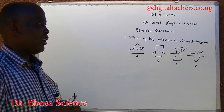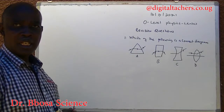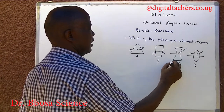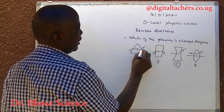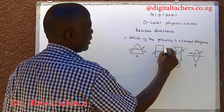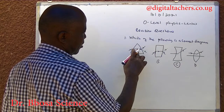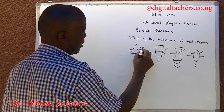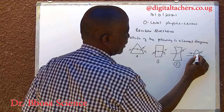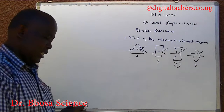Number one: which of the following is a correct diagram? A, B, C and D. You can pause and answer. The answer is C. Here, light would bend towards the thick point. It will bend away from the normal, because it is going from a denser medium to a denser medium. Light bends away from the normal, so the correct diagram would be like this. Here, it will be focused to the focal point. So the right answer is C.